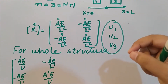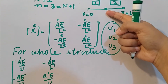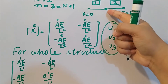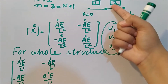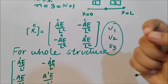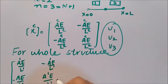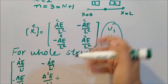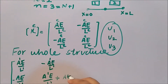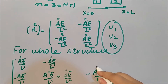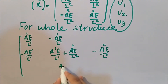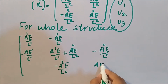The important thing is that node 2 of element 1 is exactly the same as node 1 of element 2, so the nodal loads add up at this shared point. We write AE/L and -AE/L for the second element (e=2), and the values at the shared node are combined.